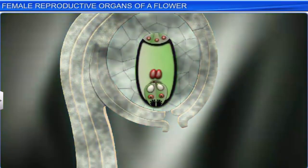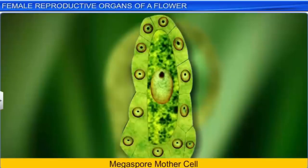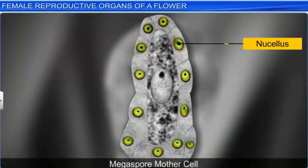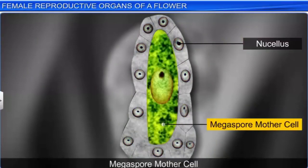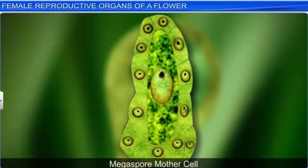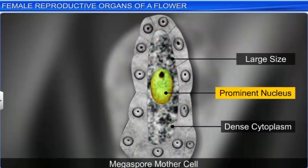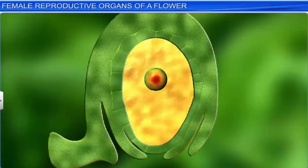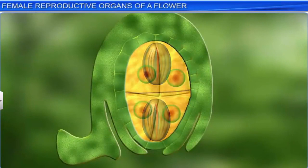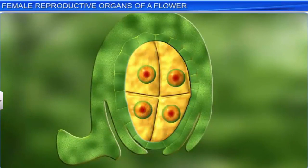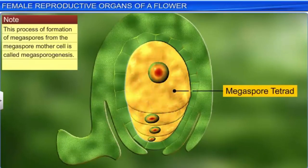In the nucellus of a mature ovule lies the embryo sac, the female gametophyte, which develops from a megaspore. This megaspore is formed when one of the nucellus cells towards its micropyle end gets differentiated into a megaspore mother cell, which can be easily distinguished from other cells due to its large size, dense cytoplasm, and prominent nucleus. The megaspore mother cell undergoes meiosis to form four megaspores which arrange themselves in a linear tetrad. This process of formation of megaspores from the megaspore mother cell is called megasporogenesis.